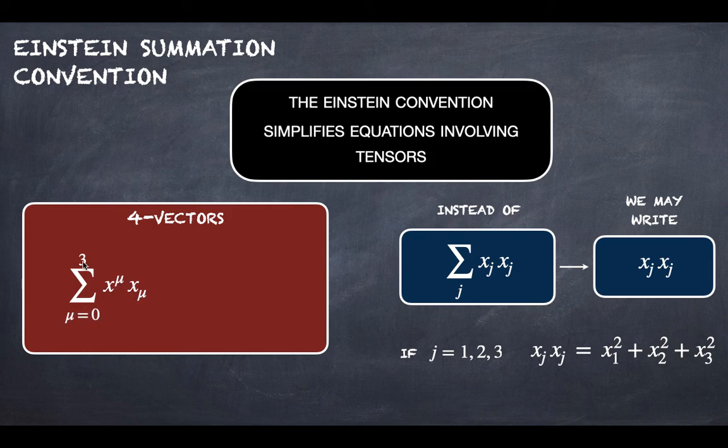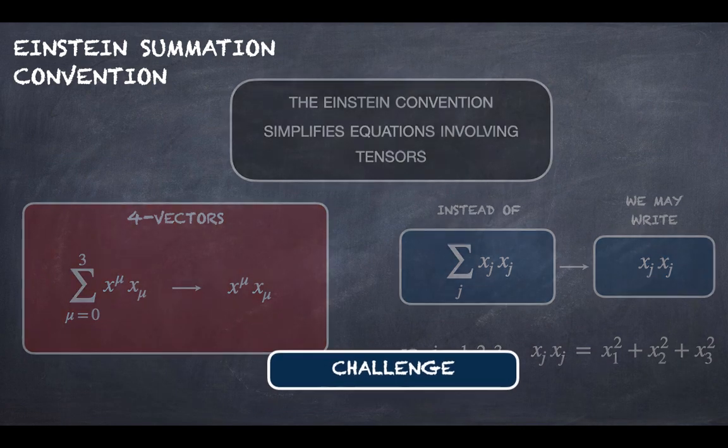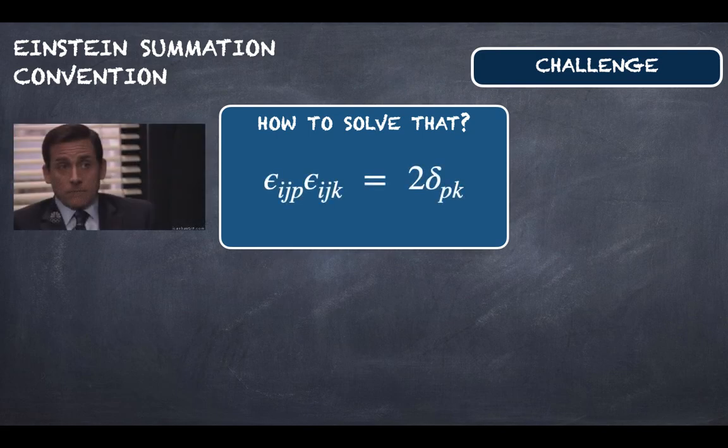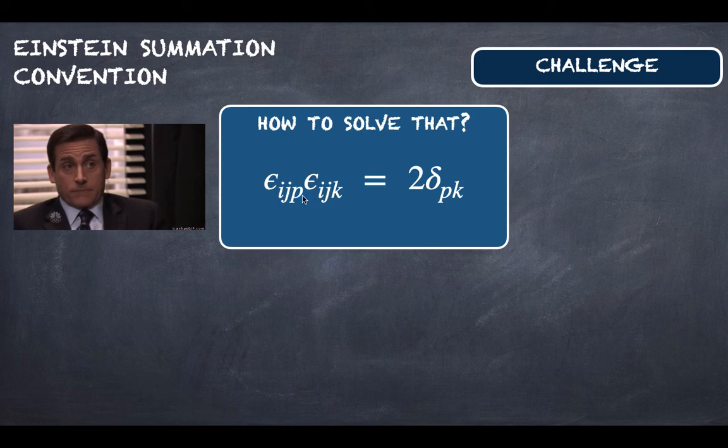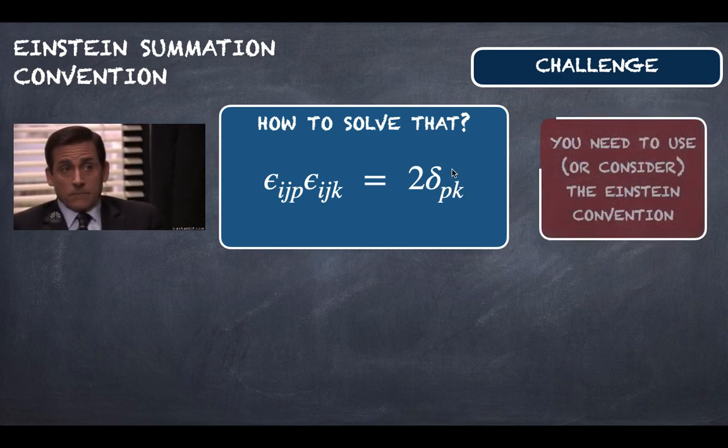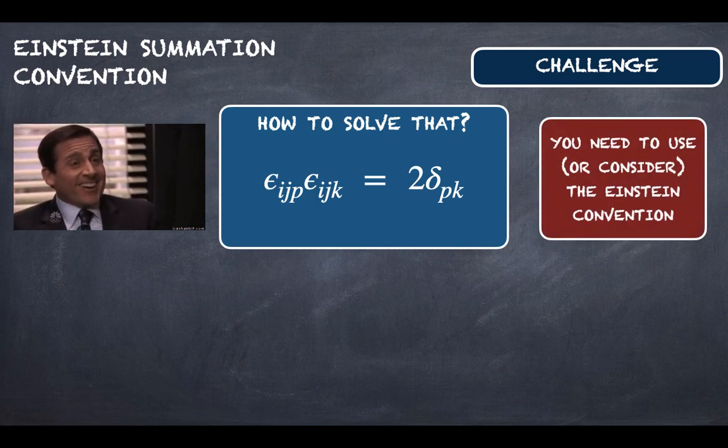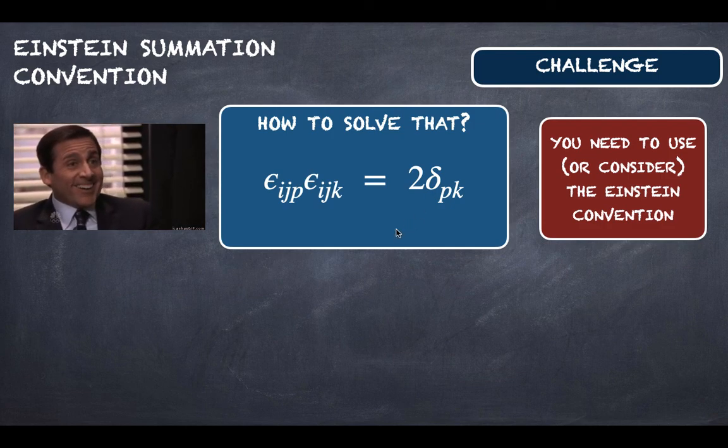And here a challenge: How to solve that? This product of two Levi-Civita tensors is equal to 2 times this Kronecker delta here. So how to solve that? You need to use, or you need to consider, the Einstein convention to solve this equation here.